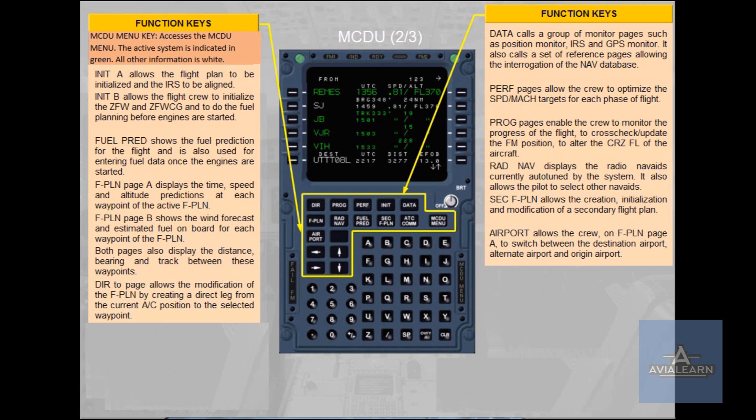DIR TO page allows the modification of the flight plan by creating a direct leg from the current aircraft position to the selected waypoint. Data calls a group of monitor pages such as Position Monitor, Inertial Reference System and Global Positioning System Monitor; it also calls reference pages allowing interrogation of the navigation database. PERF pages allow the crew to optimize the speed Mach targets for each phase of flight. PROG pages enable the crew to monitor the progress of the flight, cross-check and update the flight management position, and alter the flight level of the aircraft. RADNAV displays the radio navigational aids currently auto-tuned by the system and also allows the pilot to select other navigational aids.